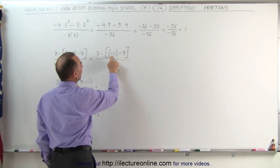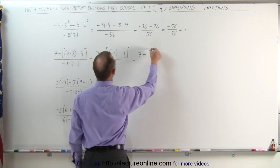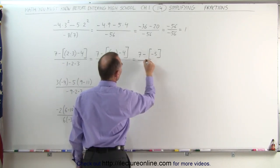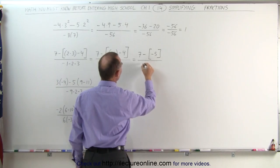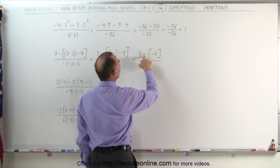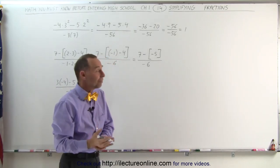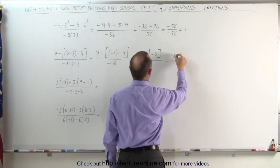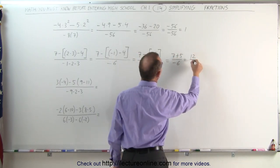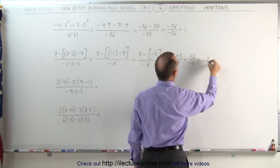Now we work out what's inside the brackets. Minus 1 minus 4 is minus 5. This is written as 7 minus, inside the brackets, minus 5. You do want to keep the brackets because of the negative signs, divided by minus 6. Here we have 7 minus a minus 5 — when you subtract a negative number, that's the same as adding the positive number. Therefore, we can write this as 7 plus 5 divided by negative 6, which equals 12 divided by negative 6. And 12 divided by 6 is 2, with one negative sign, making it negative 2.